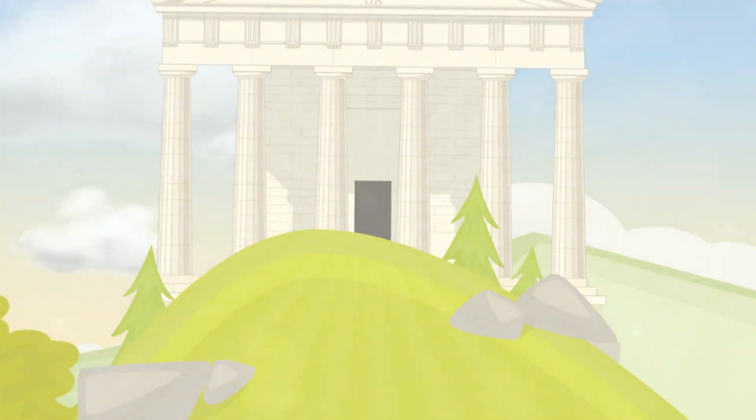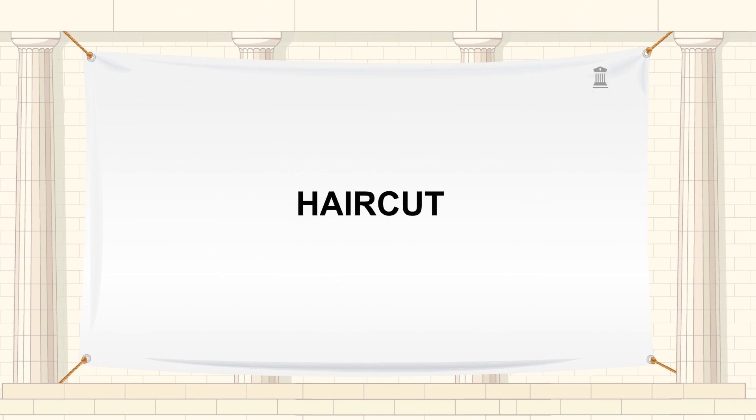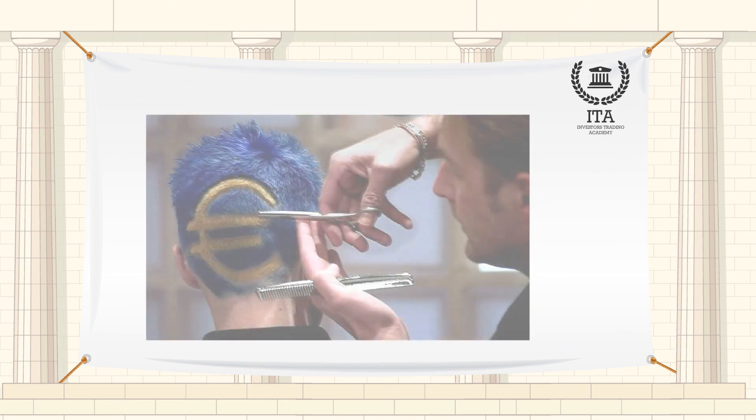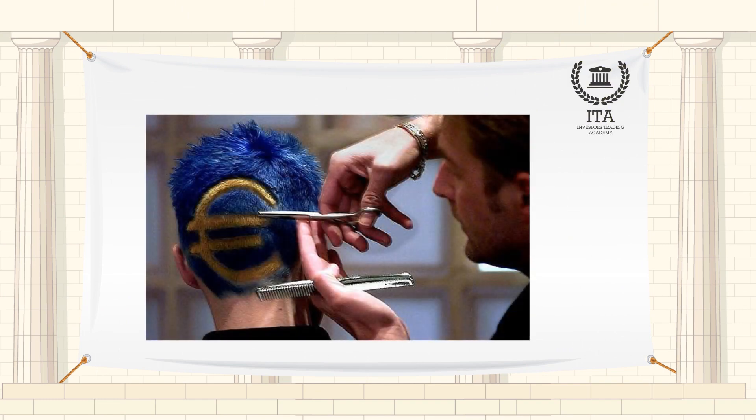A haircut is the difference between the market value of an asset and the purchase price paid at the start of a repo. An initial margin is an alternative method of calculating a haircut.